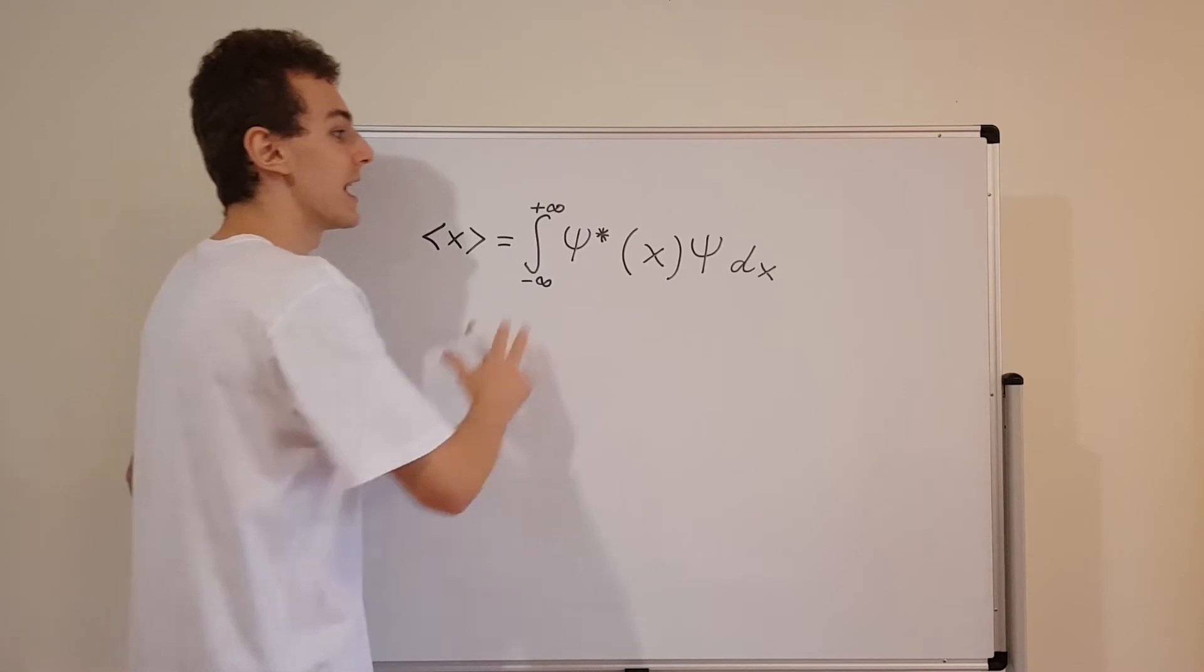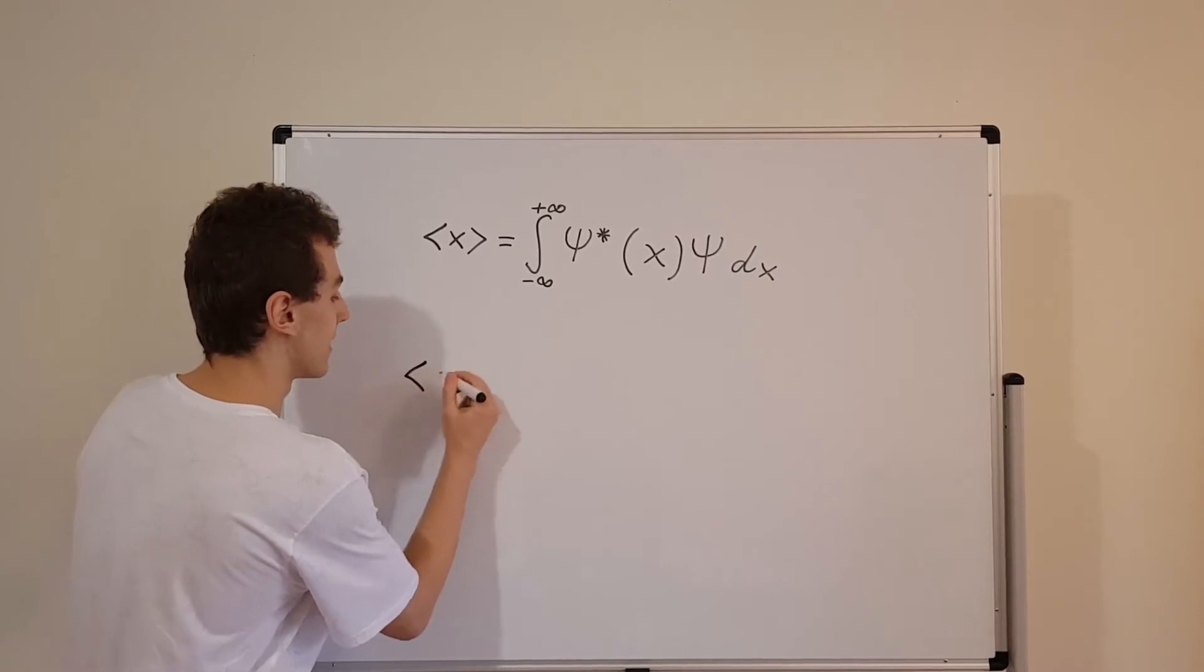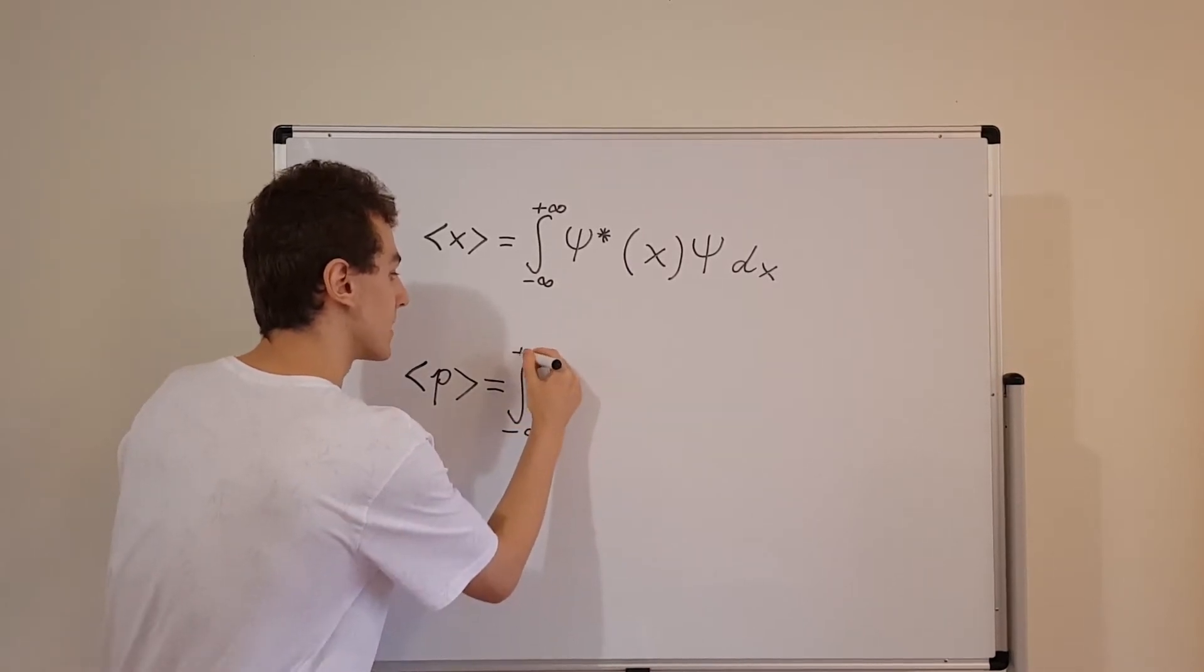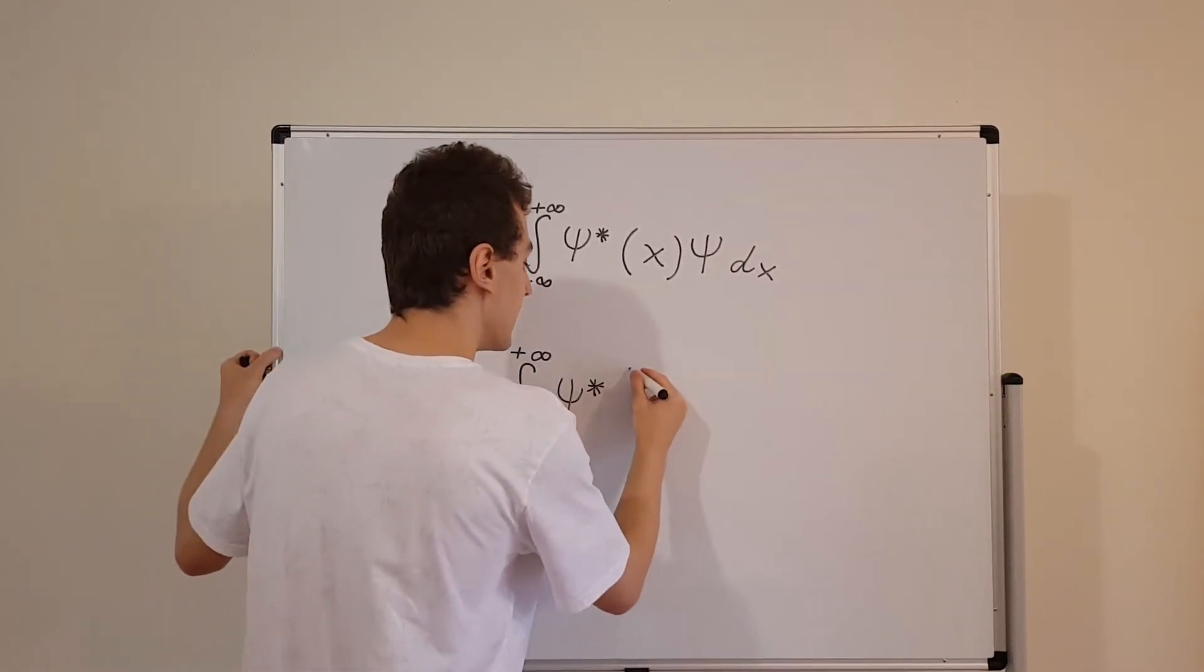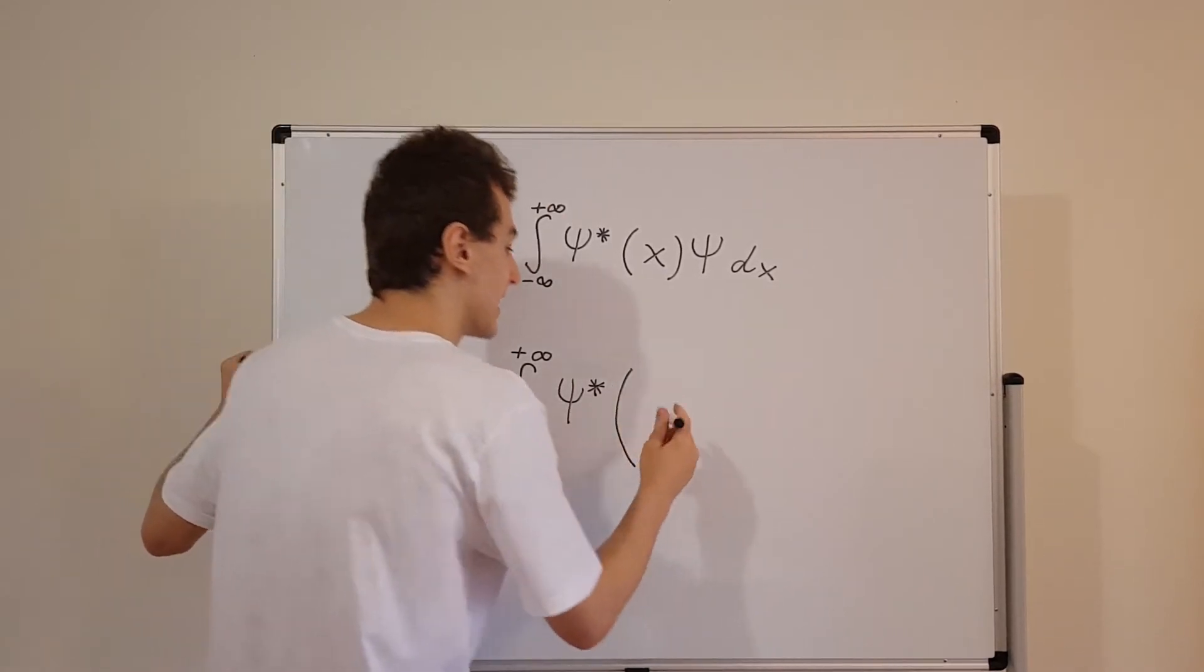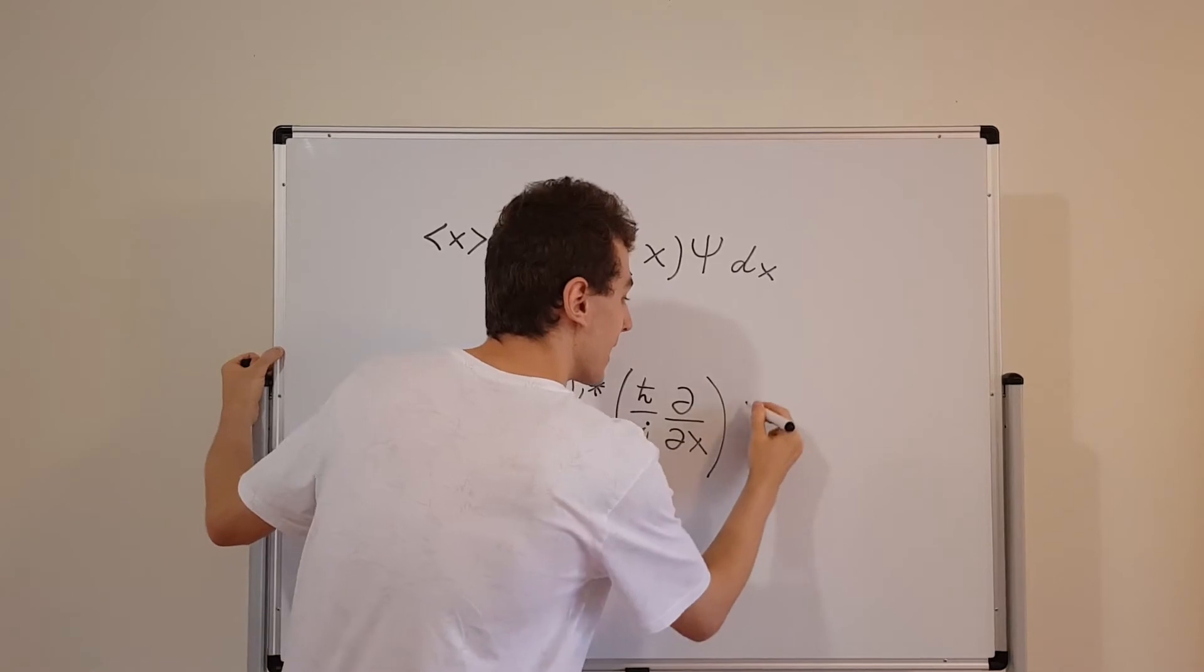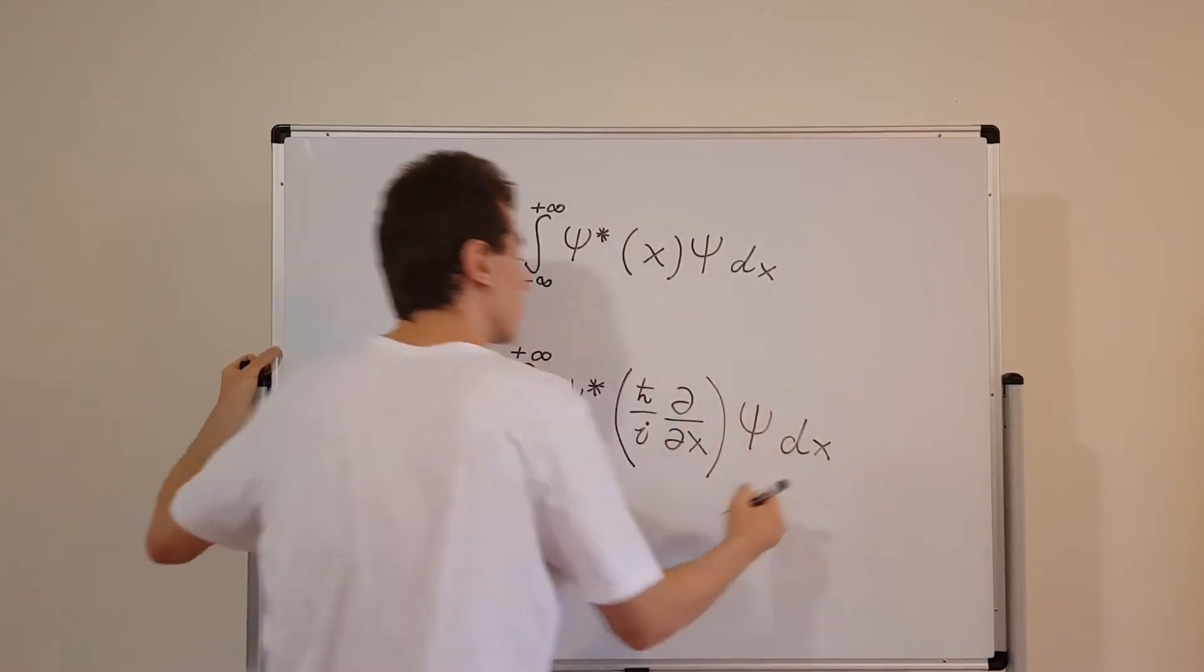Let's have a look at the analogous version of this for momentum. So momentum is denoted by p. The expectation value of momentum is equal to the integral from minus infinity to plus infinity of psi star, again the complex conjugate of the wave function. And inside over here, the middle bit of the sandwich, this integral sandwich, is actually going to be h bar over i times the partial derivative with respect to x. And that's going to be in between these two sides, and we're integrating with respect to x.